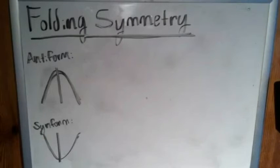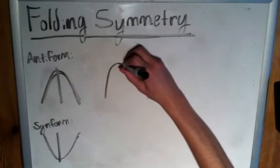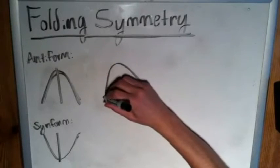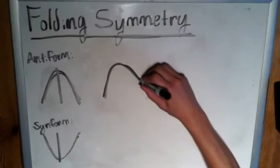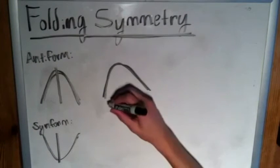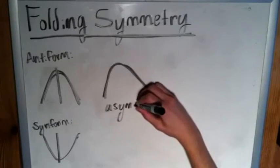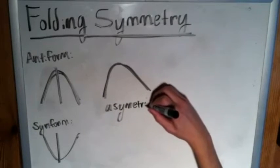In the traditional antiform and synform folds, for example, if we have one side that has experienced a much greater amount of pressure, then we are going to see that it has been folded much more than the other. Then we're going to have what's called an asymmetrical fold.